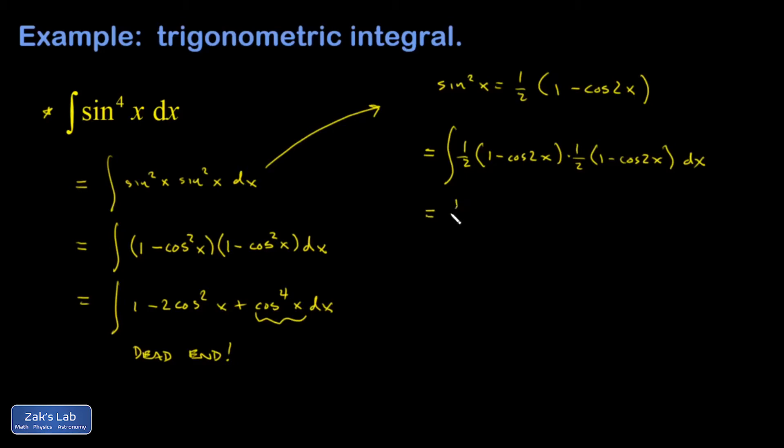And when I multiply the 1 halves, I get 1 fourth. And then inside the integral, I have to expand this by multiplying these binomials. So I'm using FOIL. I have 1 times 1 is 1. Then I have minus cosine 2x minus another cosine 2x. That's minus 2 cosine 2x. Plus cosine squared 2x dx.